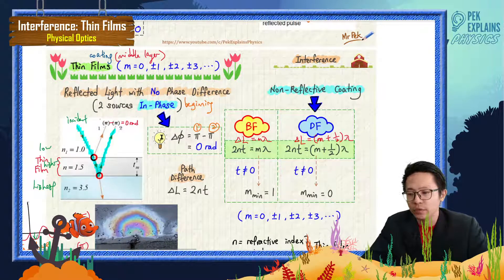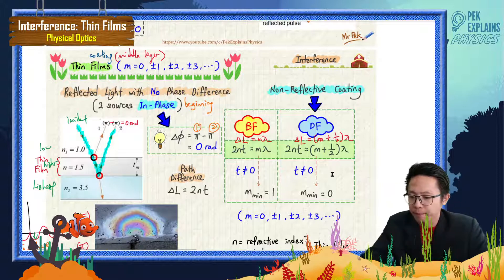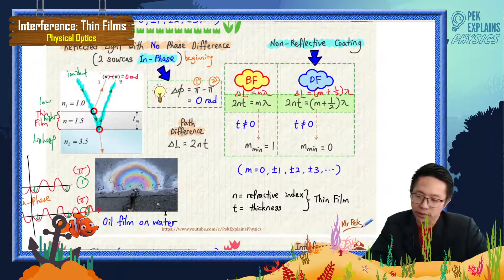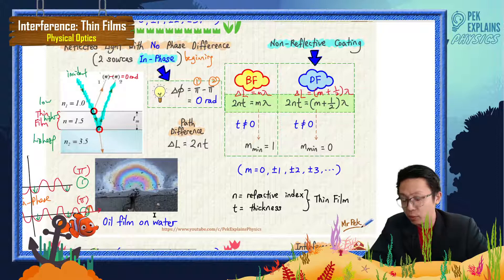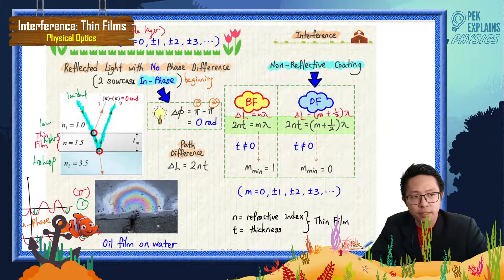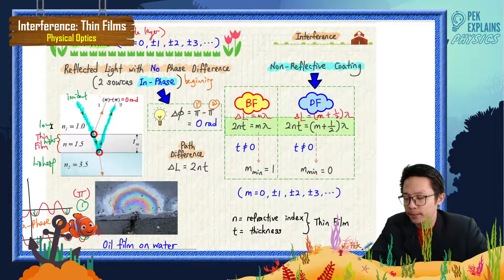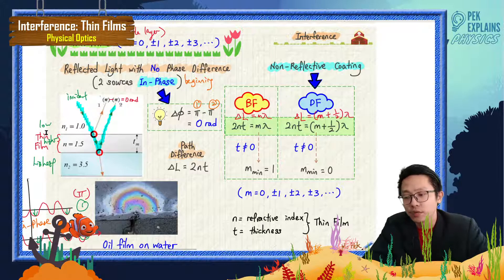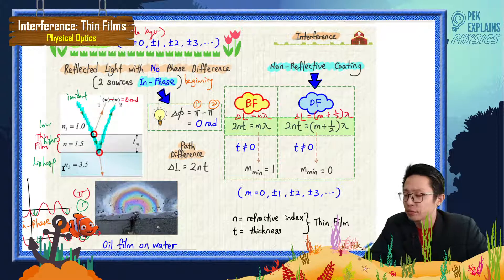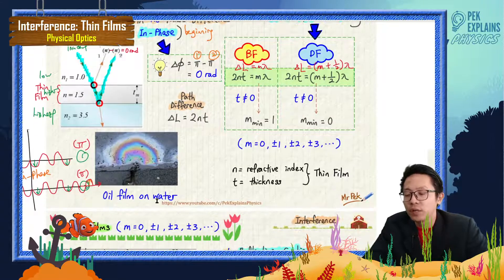Now let us continue with our thin film. I want to talk about the oil film on water. We are still in the two sources in phase case — reflected light with no phase difference. The first layer has the lowest refractive index, followed by a higher refractive index, and the last layer has the highest refractive index. So oil film on water is one example of this case.